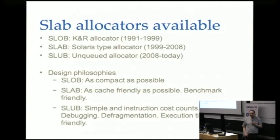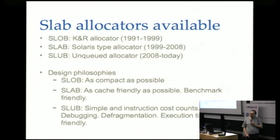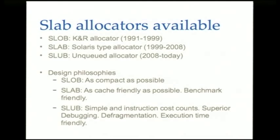Slab was designed by the Solaris developers to be as cache-friendly as possible and to run benchmarks very well. It tries to guess which objects may still be hot in the CPU caches and keeps them in queues. This guessing causes a huge number of queues to develop where objects are stored, cycled, expired every two seconds and moved around. Slub came along to make things as simple as possible, ensuring that instruction counts in critical paths are very low.